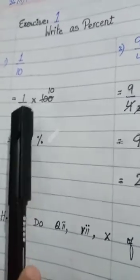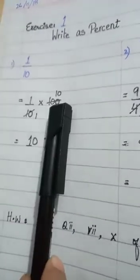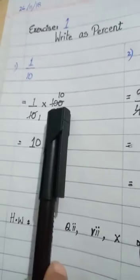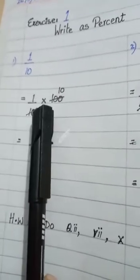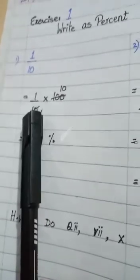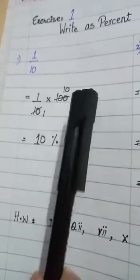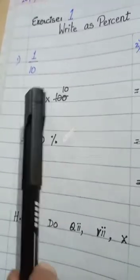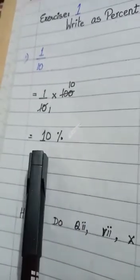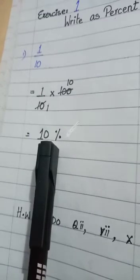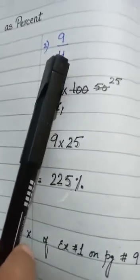Take 1 upon 10 multiplied by 100. Now solve this expression. We can simplify 10 and 100 using the table of 10: 10 ones are 10, and 10 tens are 100. After simplifying, multiply in the numerator: 1 into 10 is 10. The denominator has just 1, which is invisible. So 10% is the answer.